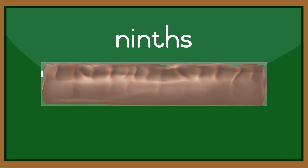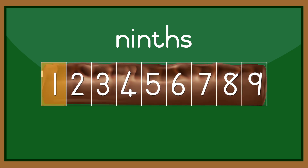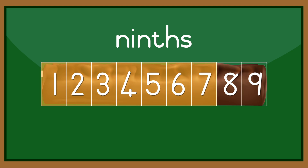In this example, the whole is divided into nine parts. Those parts are called ninths. One ninth, two ninths, three ninths, four ninths, five ninths, six ninths, seven ninths, eight ninths, nine ninths, which equal a whole.